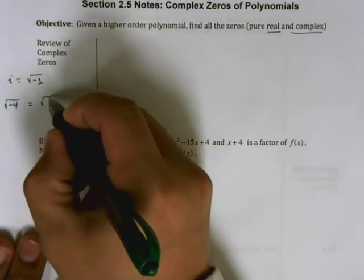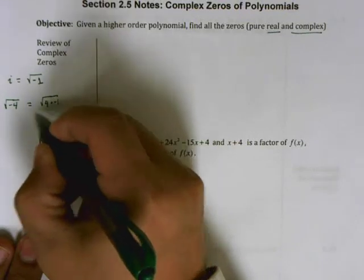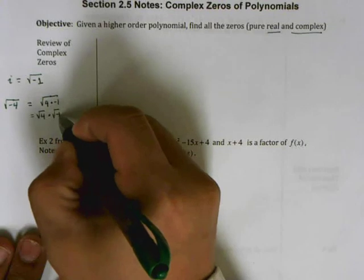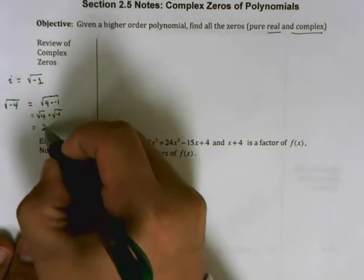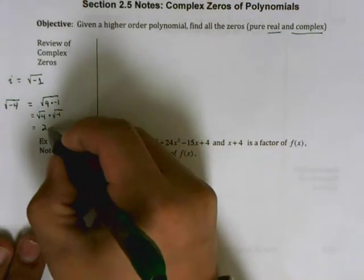This becomes the square root of 4 times negative 1, which is the square root of 4 times the square root of negative 1. Square root of 4 is 2, square root of negative 1 by definition is i, so this is 2i. Just a very quick refresher on imaginary numbers.